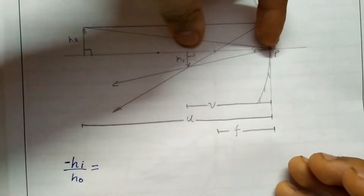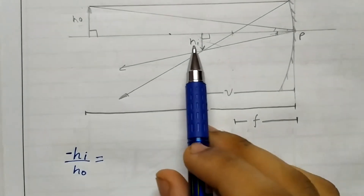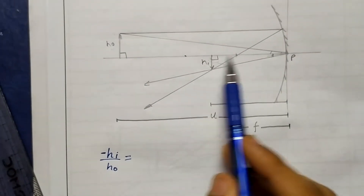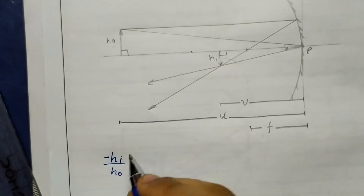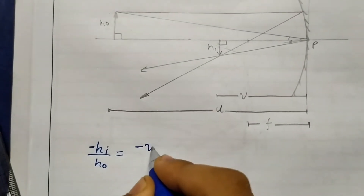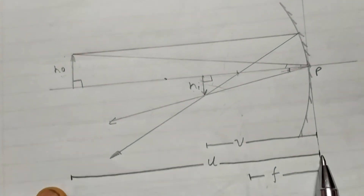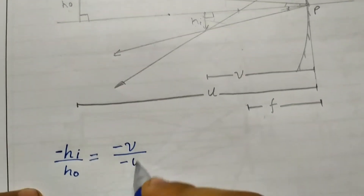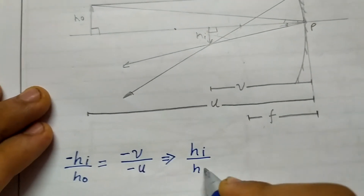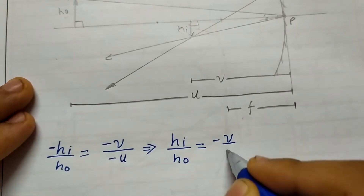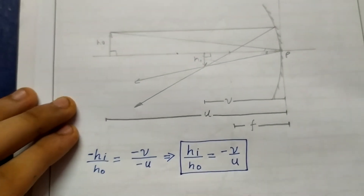We consider the actual signed values, not just magnitudes. Since the image side is towards the negative x-axis, that distance is negative v, and the object distance is negative u. Therefore: height of image divided by height of object equals minus v over minus u, which gives hi over ho equals minus v by u. Let me box this equation because we will use it later.